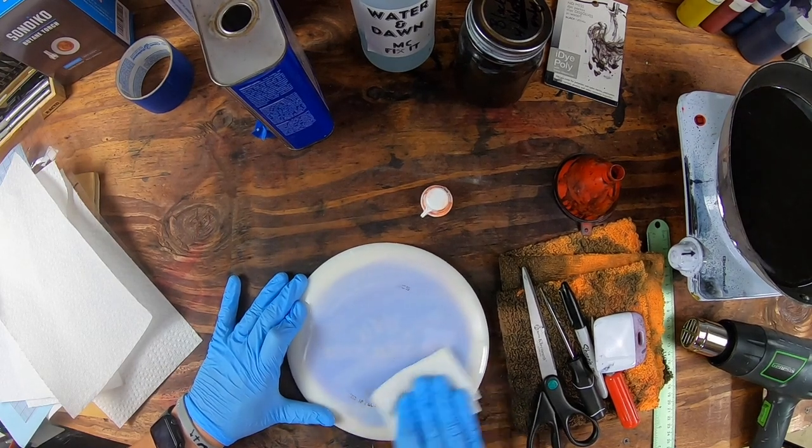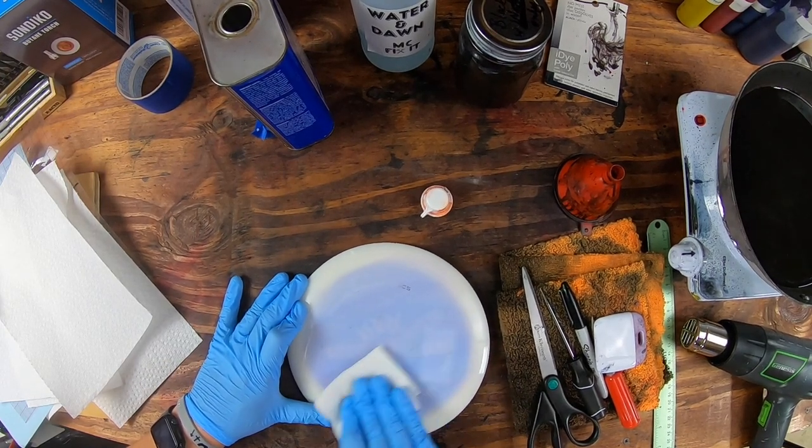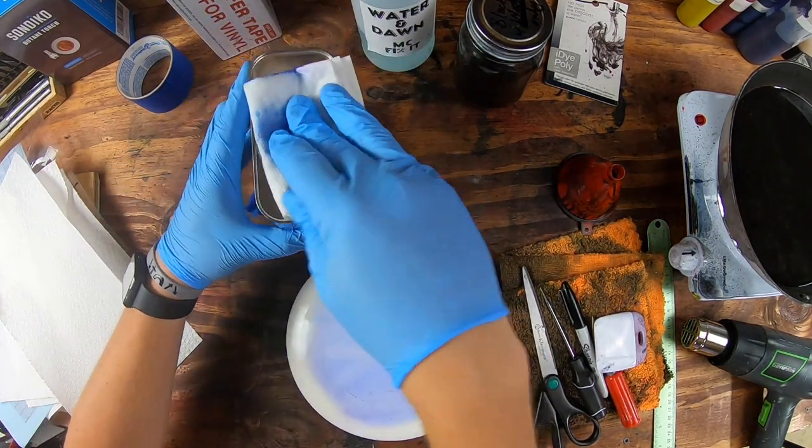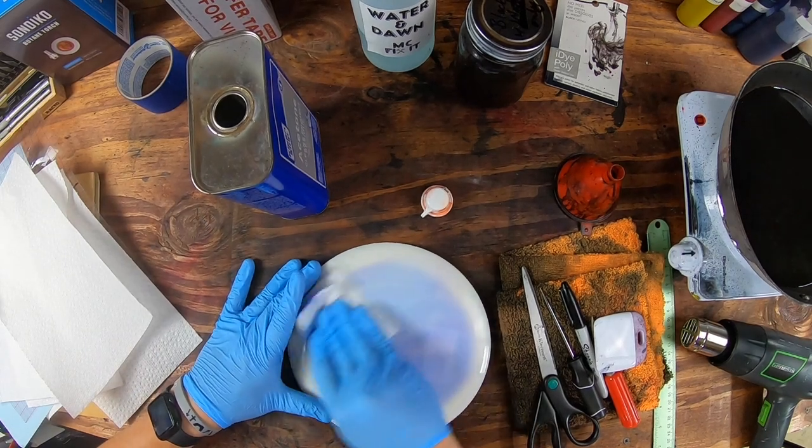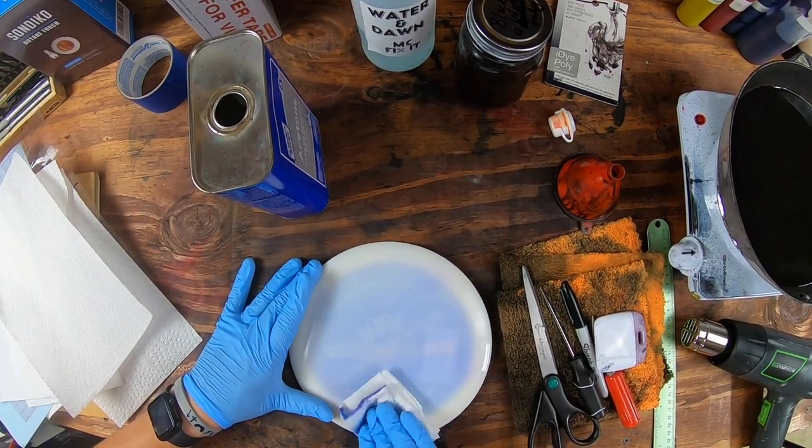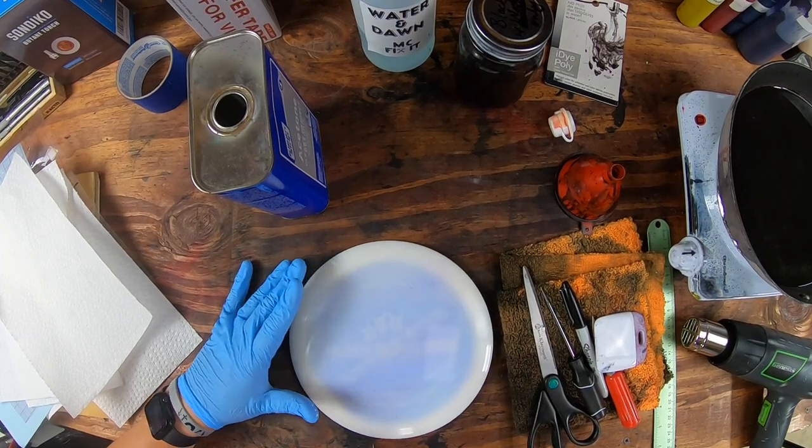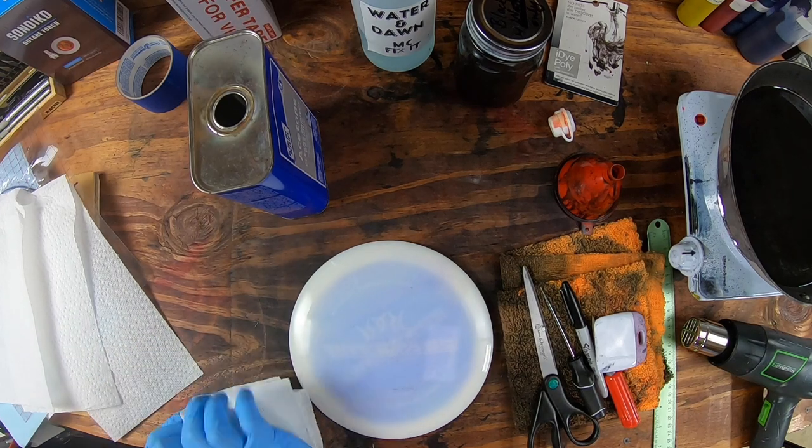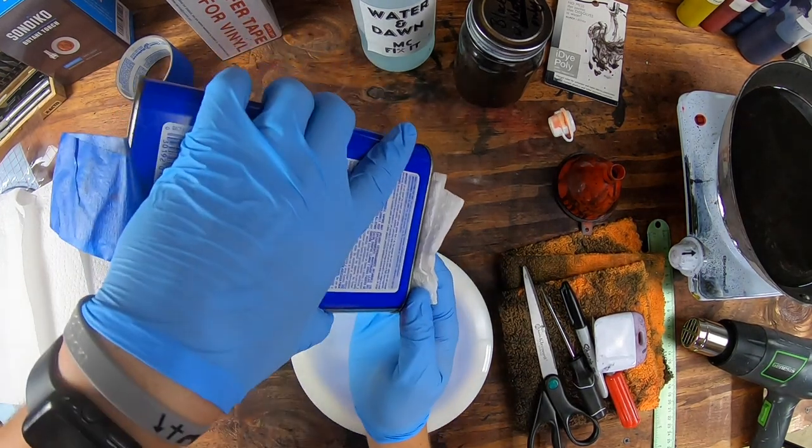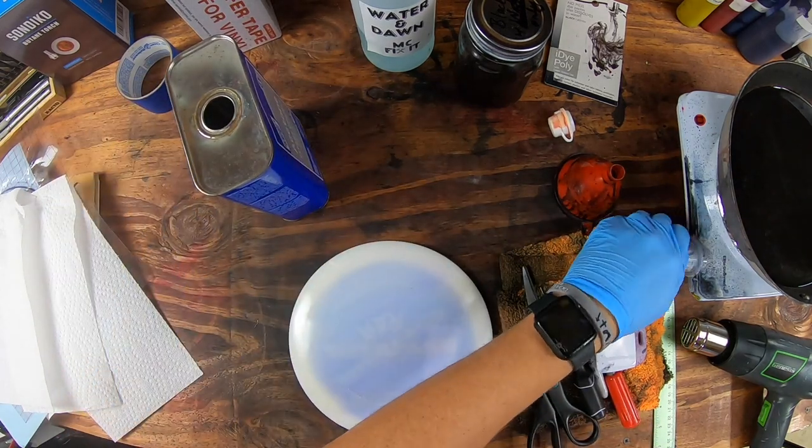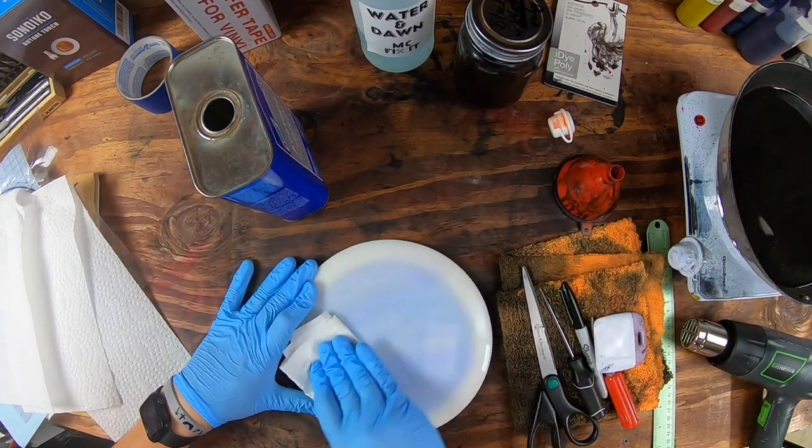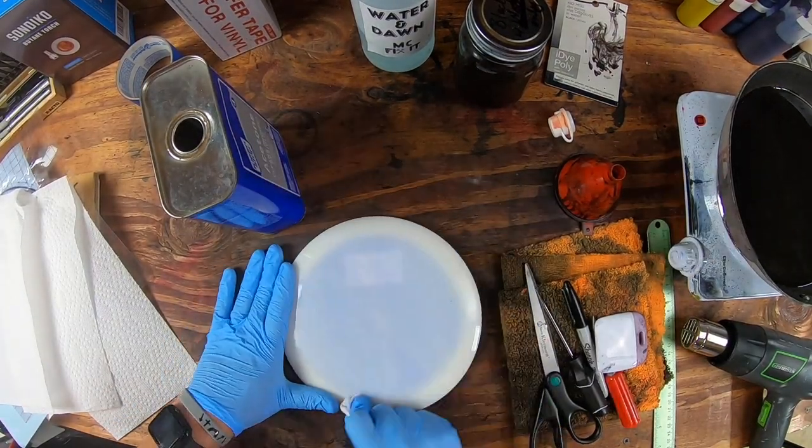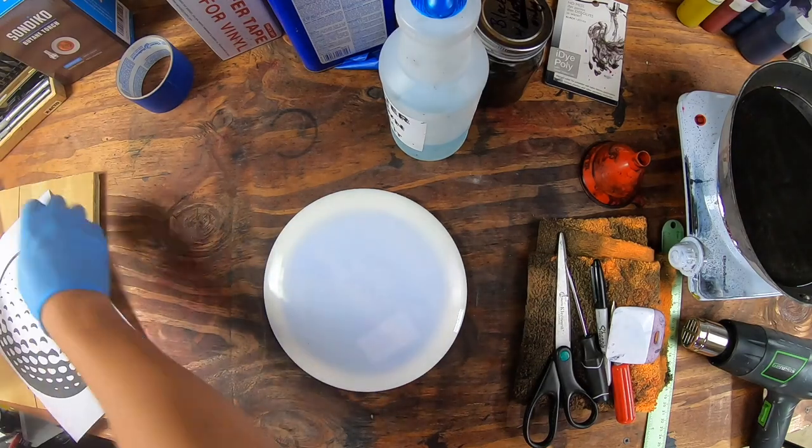So fold it in half a couple of times, grab some acetone, and just begin working off that stamp. Acetone does a pretty good job of eating through just about everything when it comes to it, not always 100% perfect, but it does a really good job. You're going to do it a couple of times because it was a double stamp. There's like kind of the dye that you saw in the stamp, and you do want to make sure you get that off. I'm going to go ahead and turn this off. It is just starting to smoke just a little bit out of the corner of my eye.